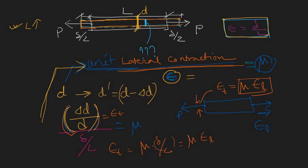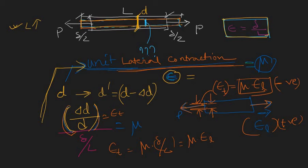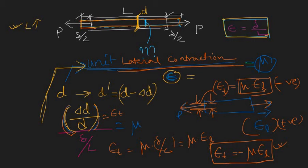One more thing: when you are applying a tensile force, epsilon_L is always positive because the length is increased, but the diameter contracts — so epsilon_T is always negative. When expressing epsilon_T in terms of epsilon_L, you have to use mu along with a minus sign. I'm discussing this because I will use this formula when discussing the strain effect in biaxial stress — the Poisson effect.